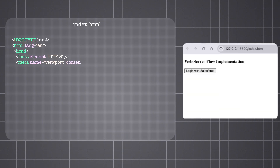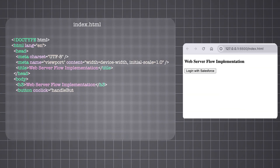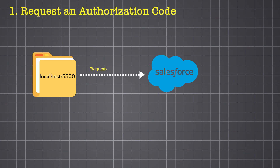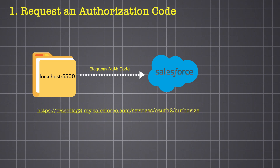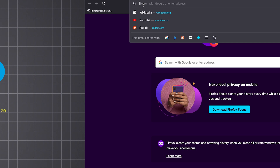Let's implement the button. We have a simple HTML and JavaScript application with a 'Login with Salesforce' button. When the button is clicked, it calls the handleButtonClick function defined in index.js. This initiates step one of the OAuth 2.0 web server flow — requesting an authorization code. To initiate step one, we need a few key components. First, there's the authorization endpoint, which is your Salesforce org's URL with the path services/oauth2/authorize. When you try to request an authorization code from Salesforce without including the required parameters like client ID, redirect URI, and response type, you'll immediately run into an error.